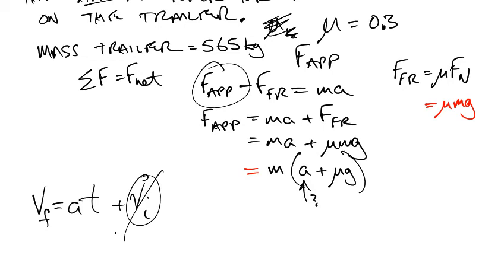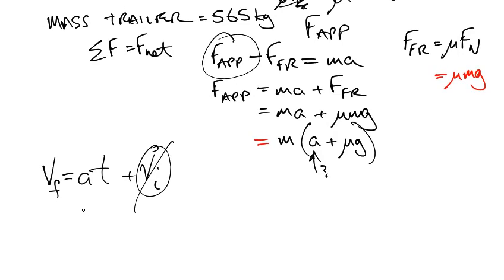Initial velocity is zero. Get rid of it. And we're looking for A. So we can say A equals V final divided by T if this is zero.